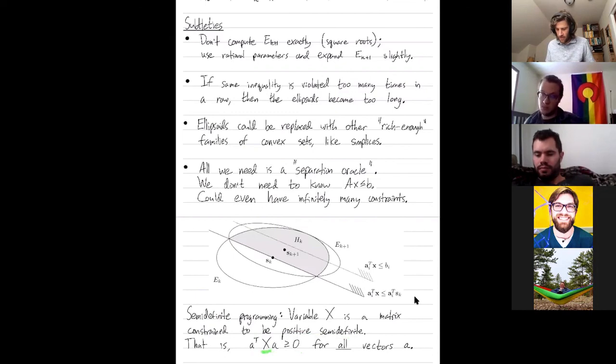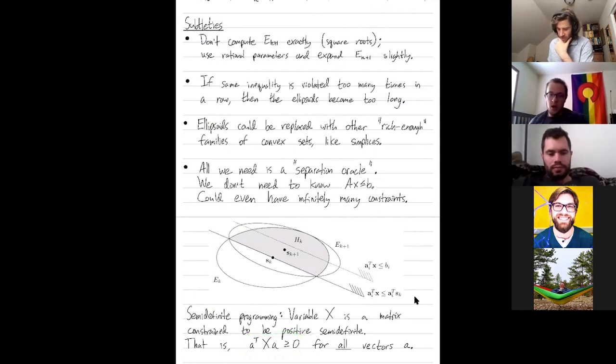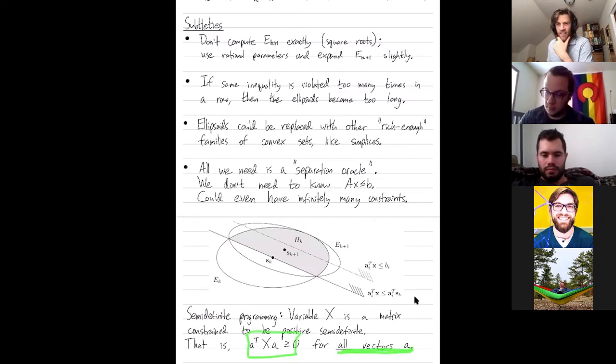And if your matrix x is positive semi-definite, then for any vector a, this real number is always non-negative. So this is really an infinite family of constraints. X is positive semi-definite if and only if this equation is true for all vectors a. So you can run the ellipsoid method here, where you have this infinite set of constraints.